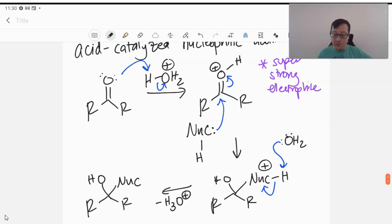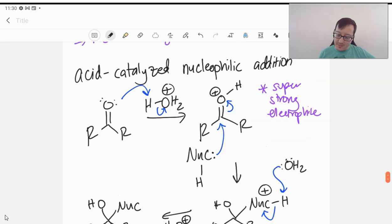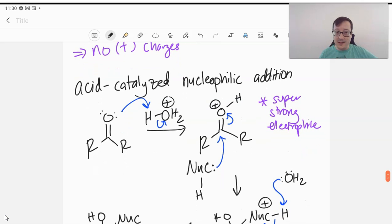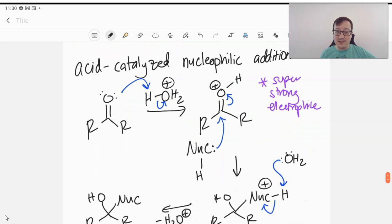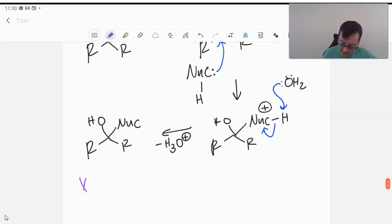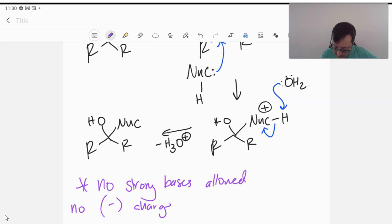So notice again here, everything had positive charges or neutral. We can have some negatives, but they have to be for very weak bases. So I mean, it's just generally the case that we don't see negatives typically with an acid-catalyzed process. But the idea here is the same, that in an acid-catalyzed process, no strong bases allowed. So generally, we do not see negative charges.